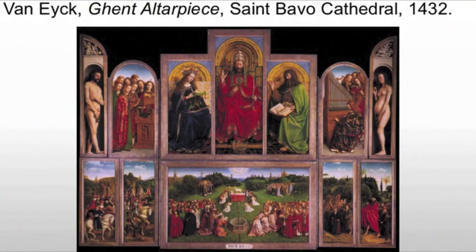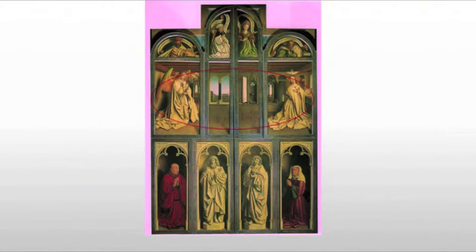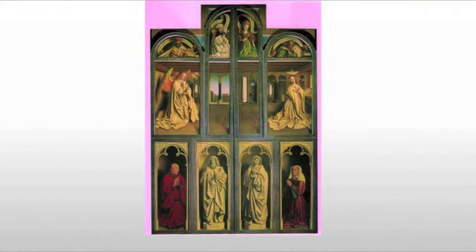When we look at it, what we see is a massive, massive piece. Starting with the outside, with the doors closed, we see a depiction of the donors kneeling in prayer to the patron saints of Ghent, who are St. John the Baptist and St. John the Evangelist. An Annunciation appears above them in the central panel, with the prophets Zechariah and Micah above.